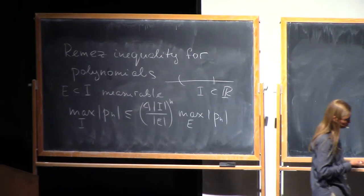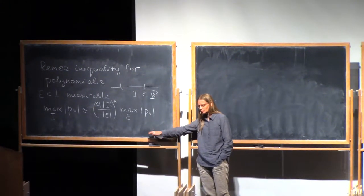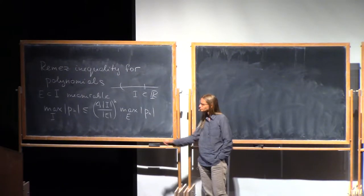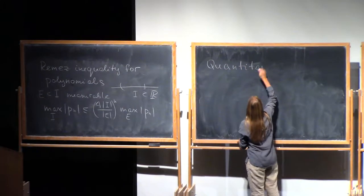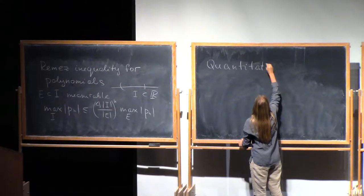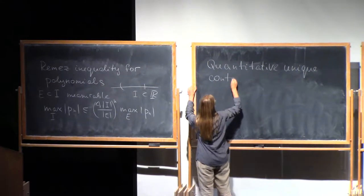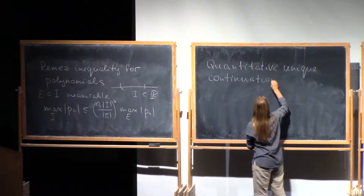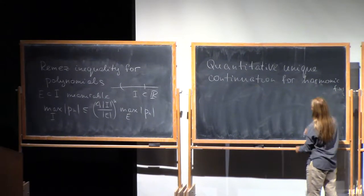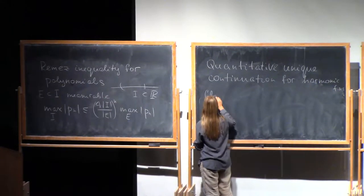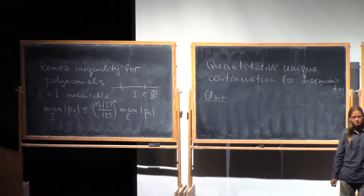We'll show now how to use this to do propagation of smallness, or quantitative unique continuation, for harmonic functions. The key point is that if you have a harmonic function, you know how to approximate it by polynomials — it's real analytic.